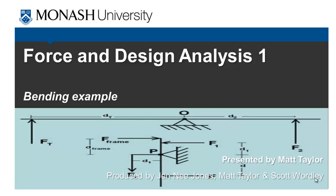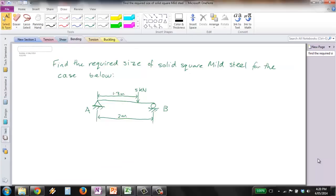Hey guys, in this video we're going to be taking a look at some bending examples. This is the example I've got for you: find the required size of solid square mild steel for the case below. We've got a pin and roller support with a load of 5kN applied at 1.3m from the pin support at A, and the total length of our beam is 2m.